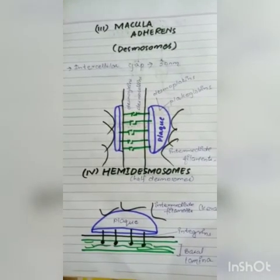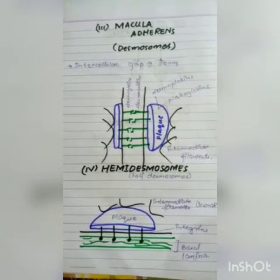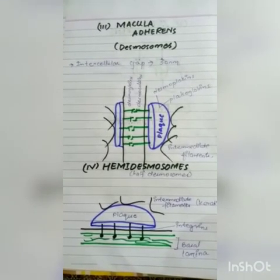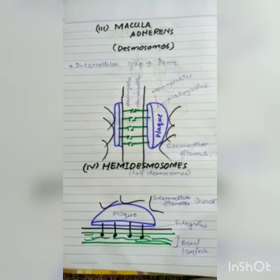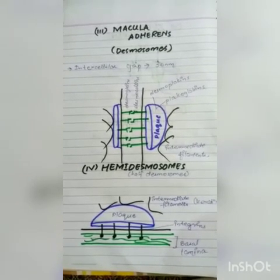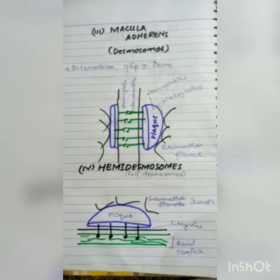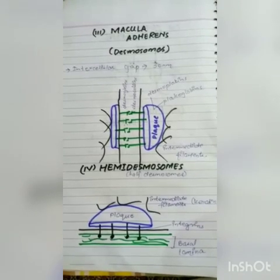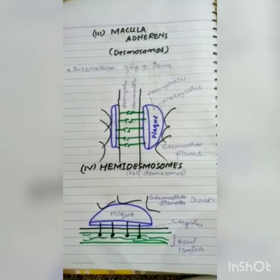Macula adherens is called desmosomes, or spot welds. These are present in epithelial cells — both simple and stratified epithelial cells along their lateral margins. The intercellular gap here is 30 nm, wider than the usual 20 nm. There is a disc-shaped plaque on both sides of the cell membrane, made of desmoplakins and plakoglobins. The transmembrane proteins involved are desmocleins and desmocollins, which interact from opposite sides. Intermediate filaments are connected to the plaque.